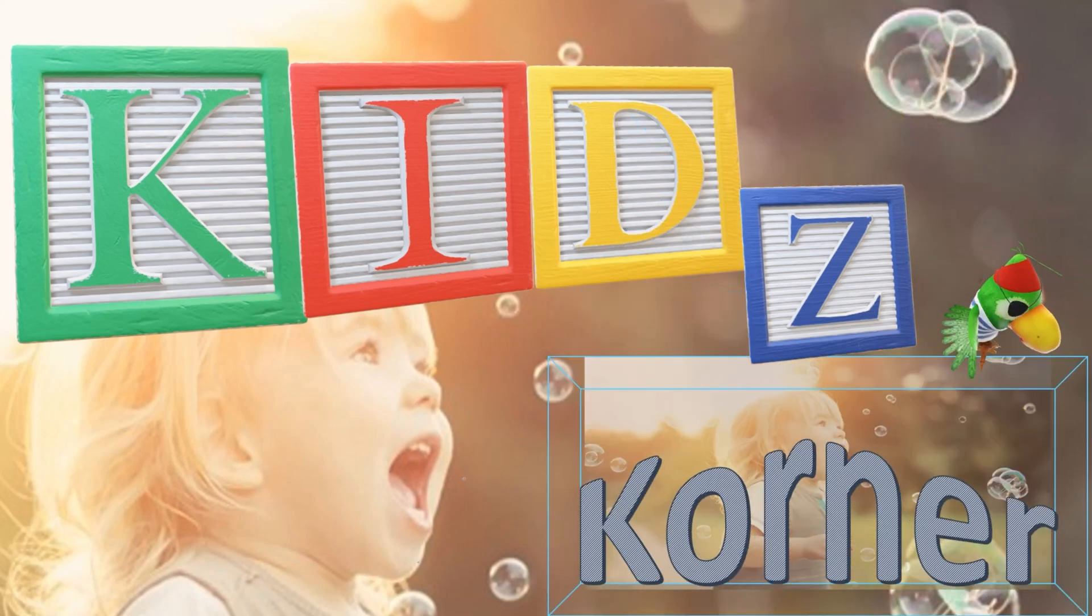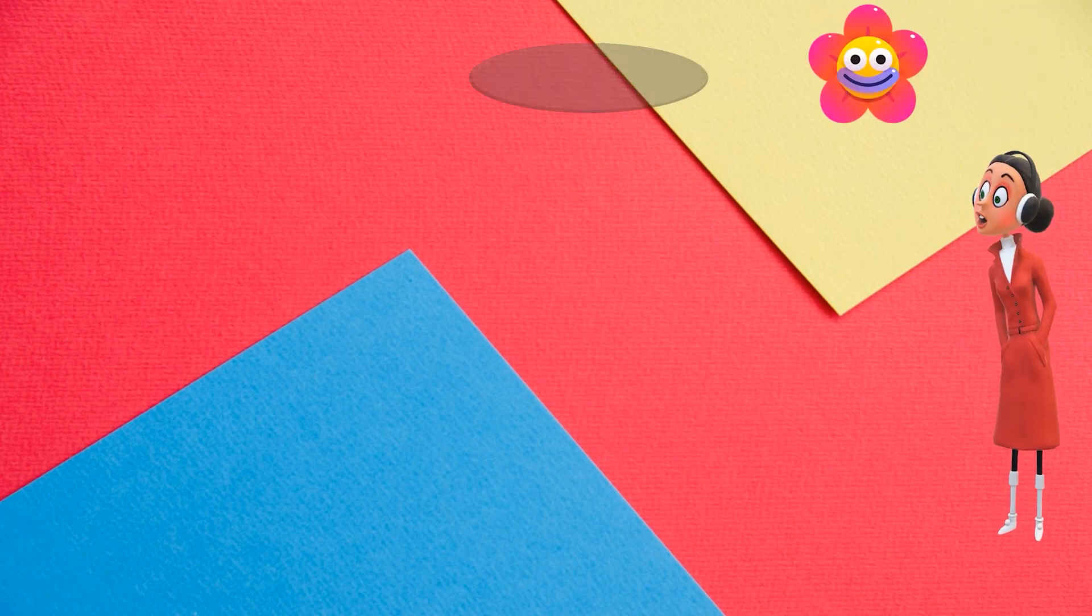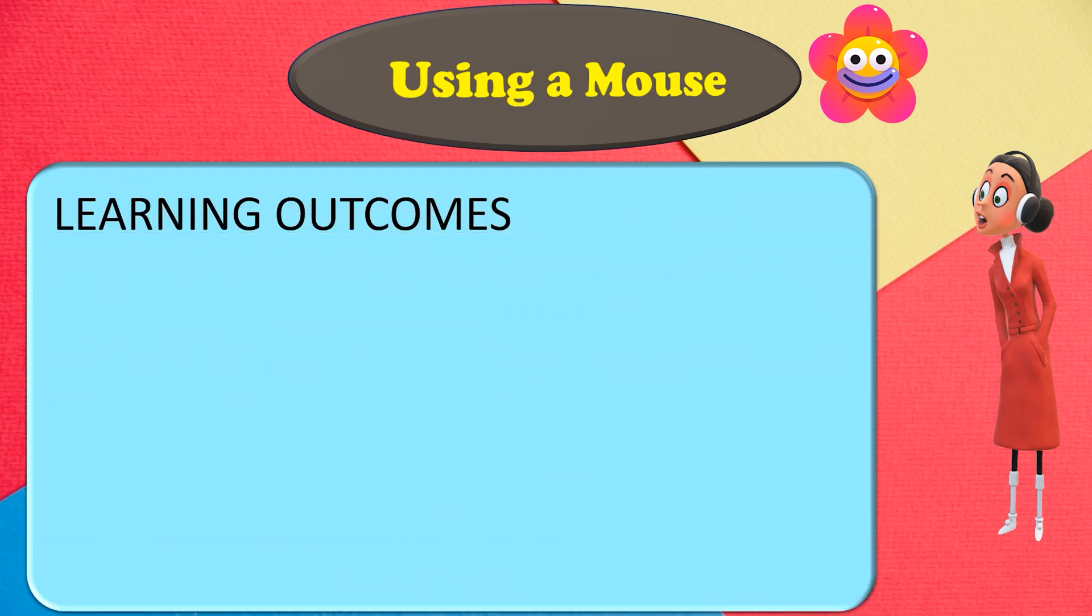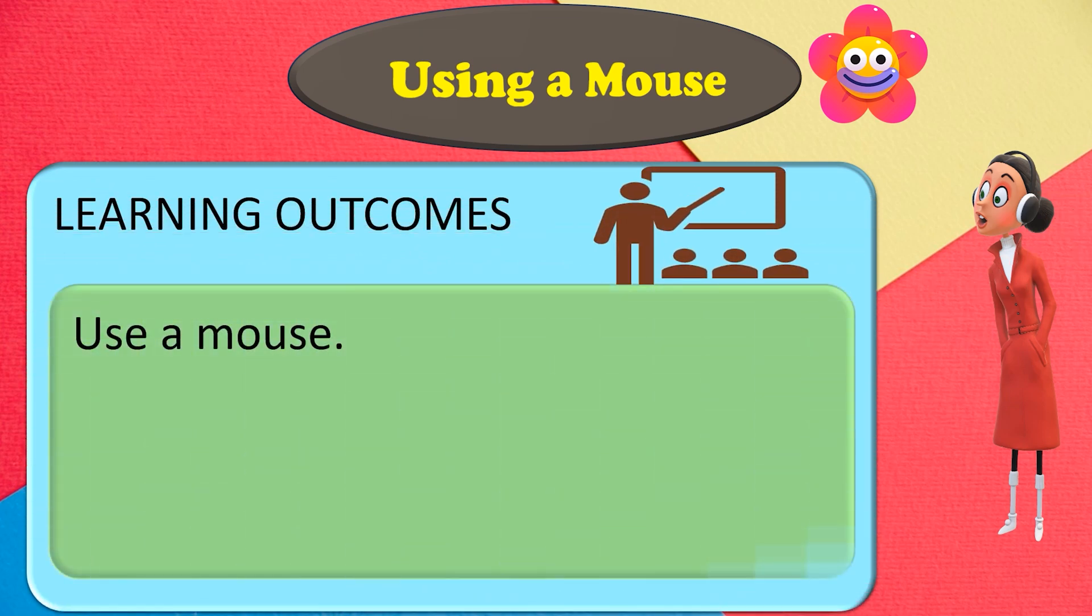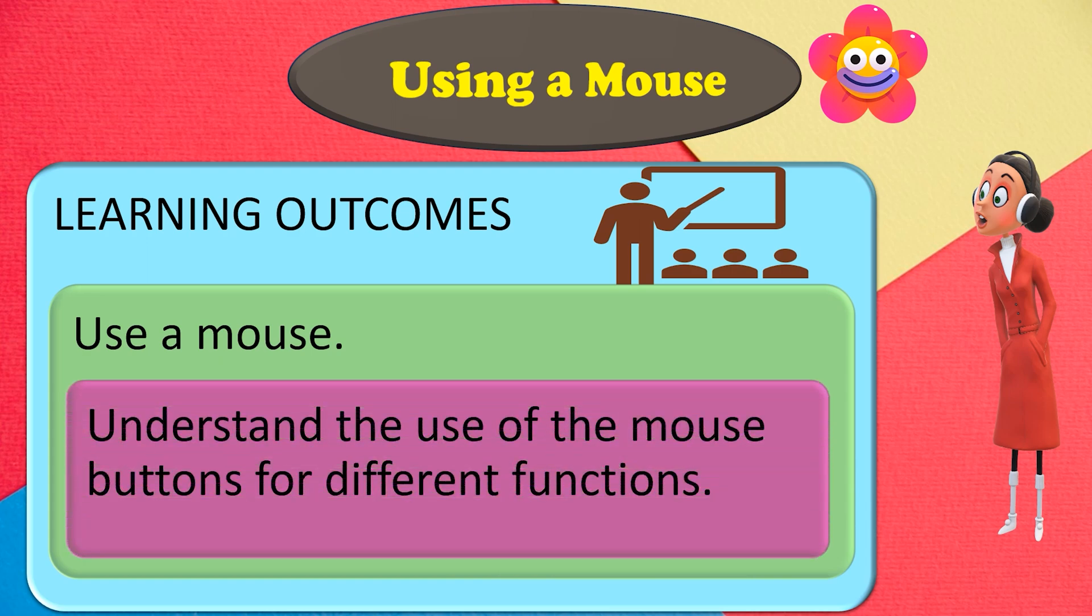Kids Corner Creative Learning. Using a Mouse Learning Outcomes: Use a Mouse. Understand the use of the mouse buttons for different functions.